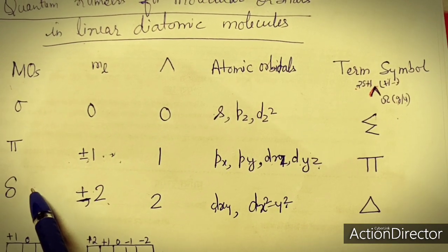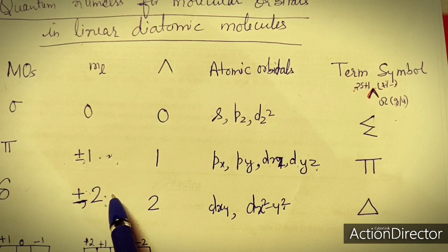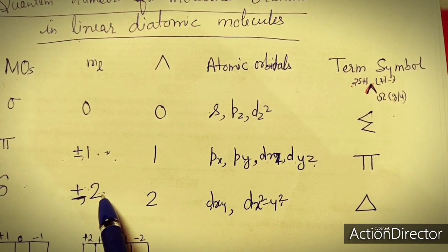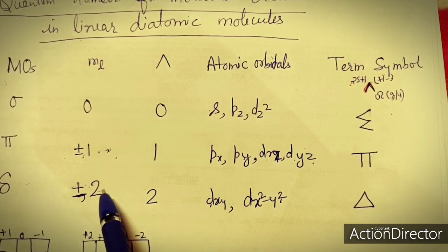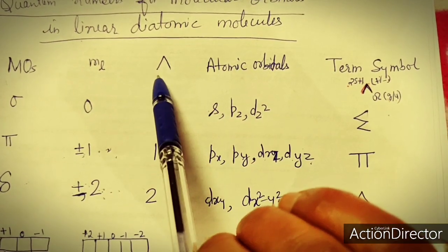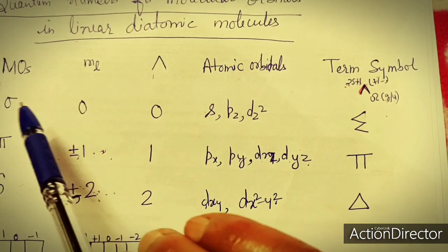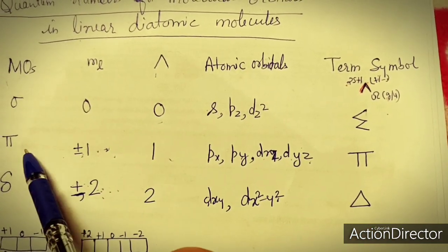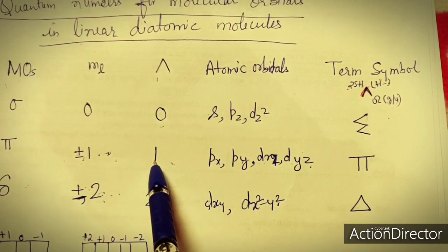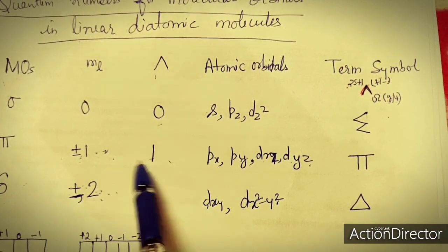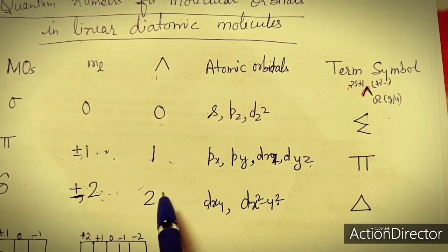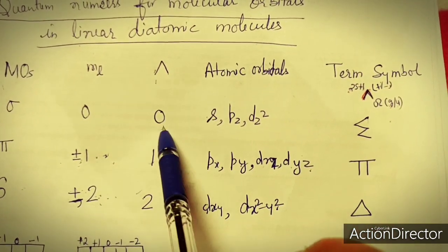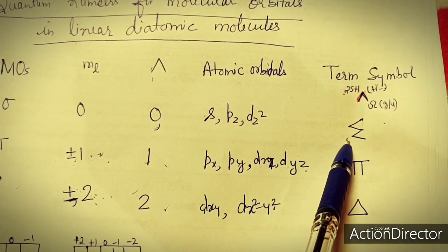For delta, l will be 2. So if lambda is 0, the term is sigma; if lambda is 1, the term is pi; if lambda is 2, the term is delta. Based on ml values we can determine lambda and assign the correct term symbol to a given configuration.